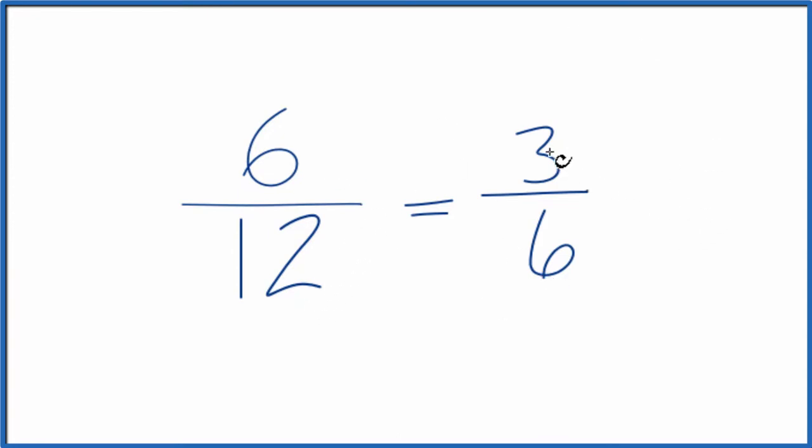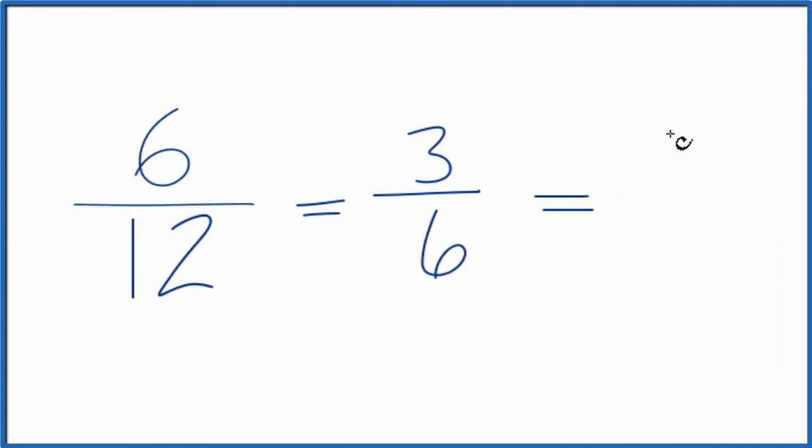We could even simplify this further because three goes into six two times. So divide three by three, three divided by three is one, six divided by three is two. So we could also say that one-half is an equivalent fraction to six-twelfths and to three-sixths.